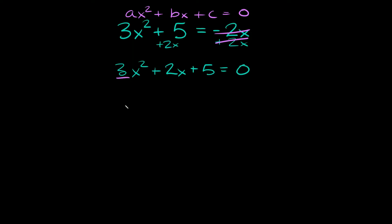So here you can see that a is equal to 3, b is equal to 2, and c is equal to 5. Now that we know what a, b, and c are equal to, we can plug them into the quadratic formula, which is this beautiful thing right here.